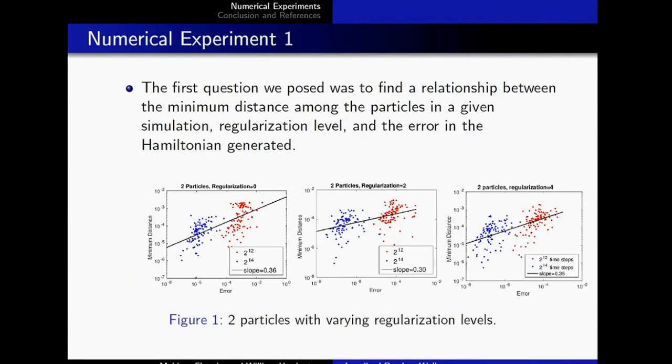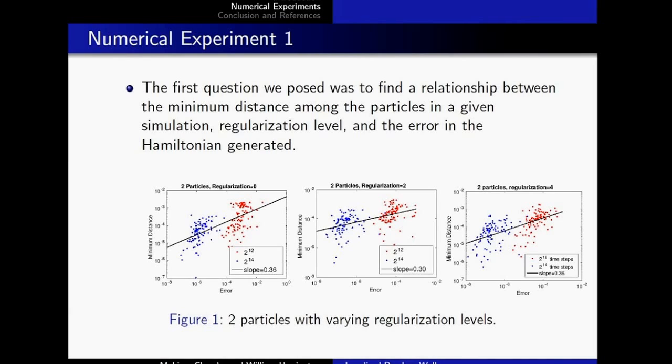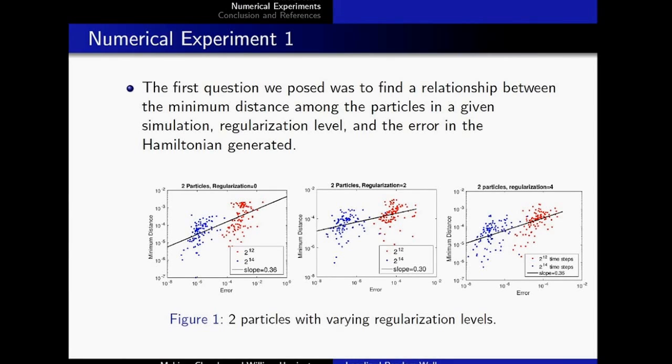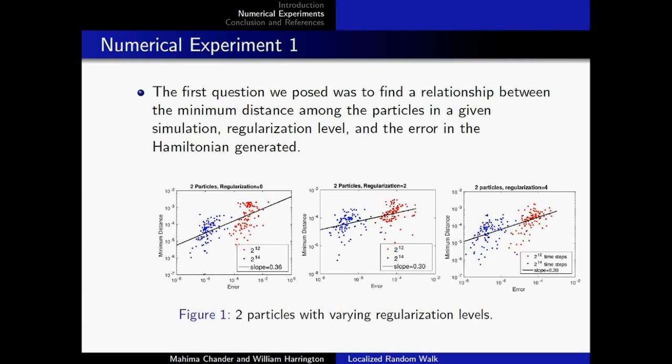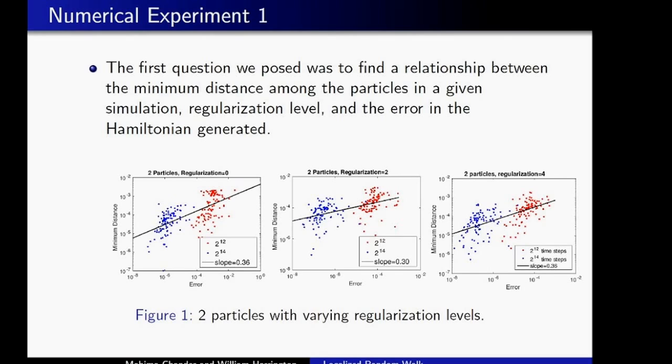So the first thing that we did was we were trying to find a relationship between the minimum distance among particles in a given simulation, the regularization level, and the error rate in the Hamiltonian generated. So to do this, we did three separate runs. And within each run, each of these points here represents a trial done with these parameters. And what we basically did see is that, for instance, in the plot all the way to my right, with two particles and a regularization zero, the correlation between the minimum distance between particles and the error rate was about 0.4. Whereas when we increased the regularization to about 4, we saw that there was a much stronger correlation at about 0.6.